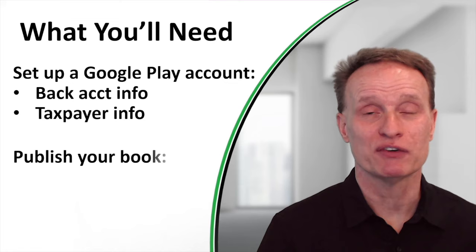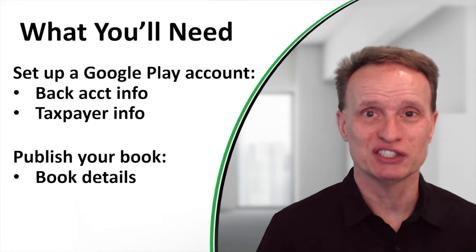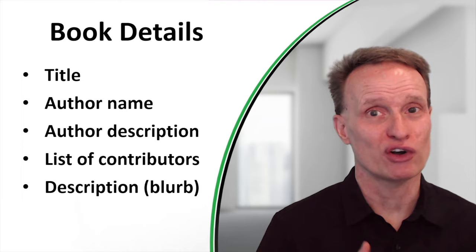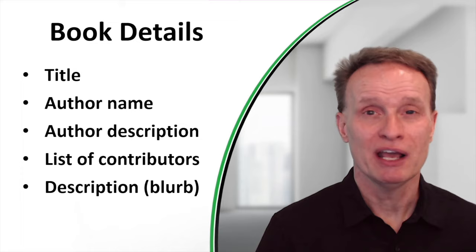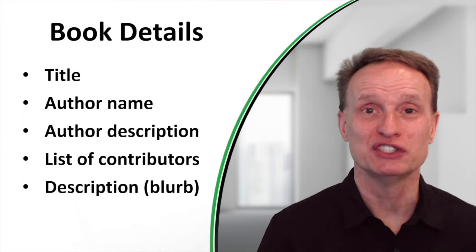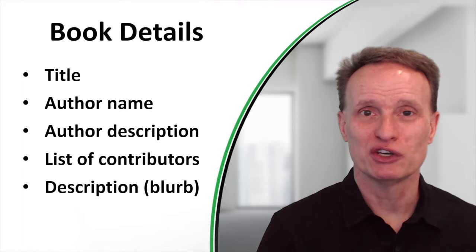Once you've set up your Google Play account, you'll also need information about each book you publish. You'll need book details including your title, author name, and author description — a couple of paragraphs about you as the author. You can optionally list contributors or acknowledge others who worked on the book. And finally, you'll need a really good book description, also known as a book blurb.